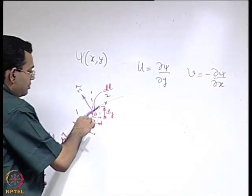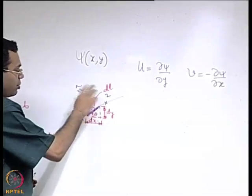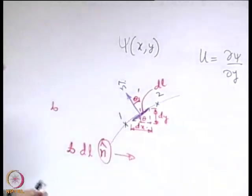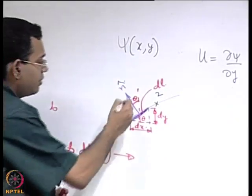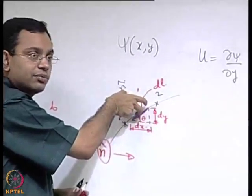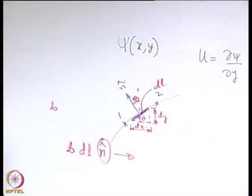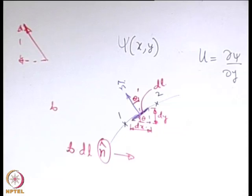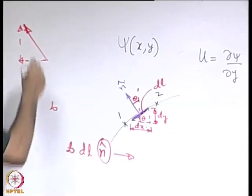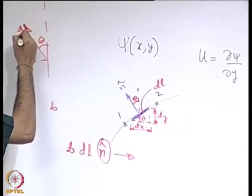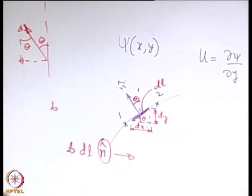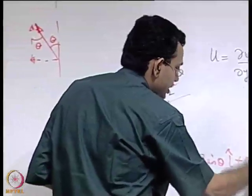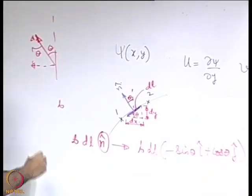The tangent to the curve makes angle theta with x, so the normal to the curve makes angle theta with y. To write n-cap in terms of theta, resolve the unit vector into x and y components. Since this angle is theta, the x-component is minus sin(theta) and the y-component is cos(theta). So the area vector B·DL is: B·DL·(−sin θ î + cos θ ĵ). This is essentially the area element in vector form.